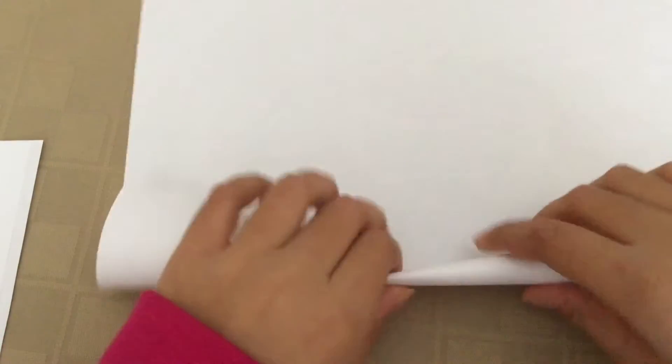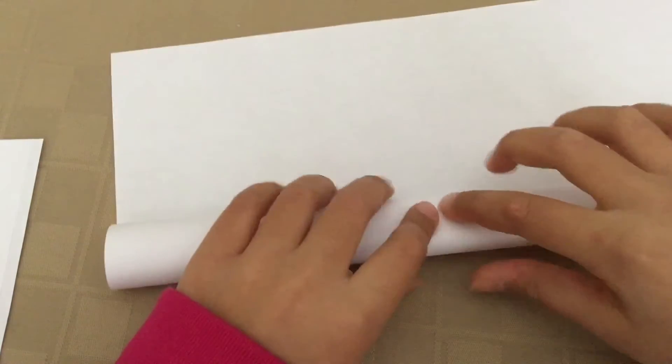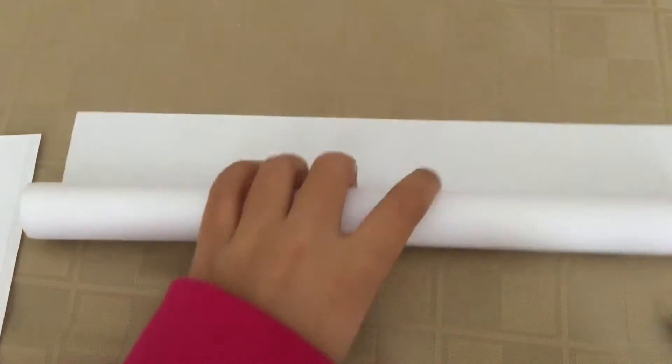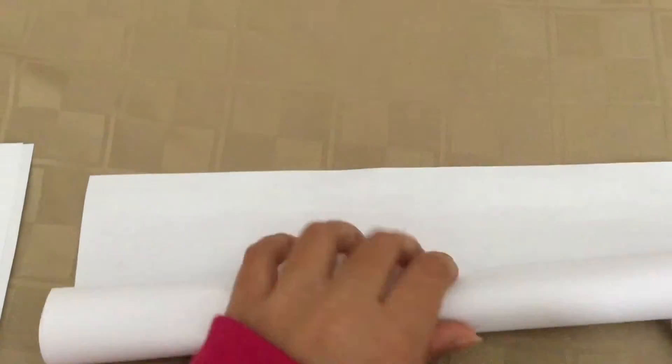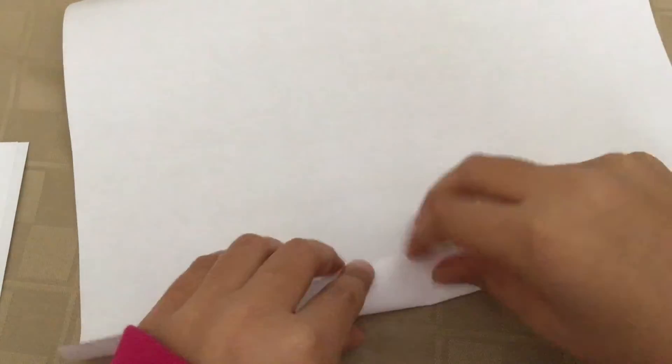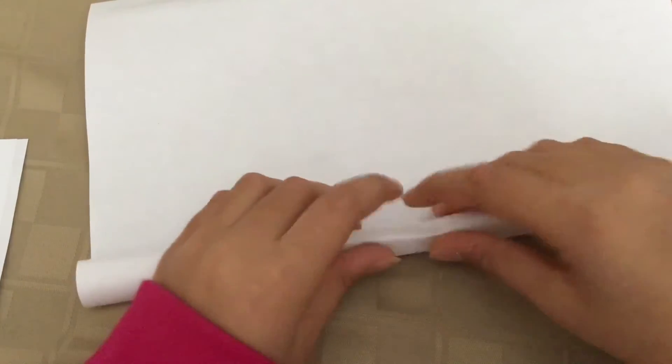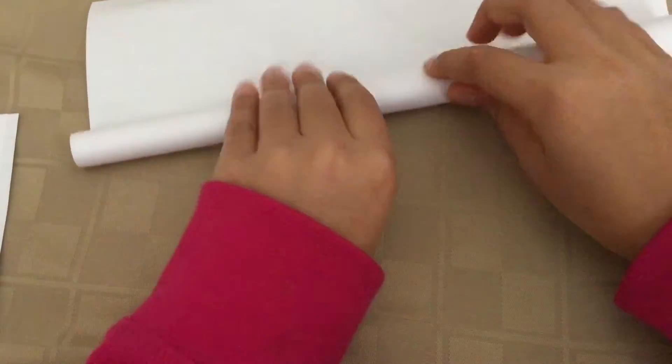First, you're going to take your first piece of paper and you're going to roll it up hot dog style like so. Now you're going to glue it with the glue stick, then you're going to proceed to roll it up. I'm going to make it not too small because you need to be able to fit pieces of paper in it.